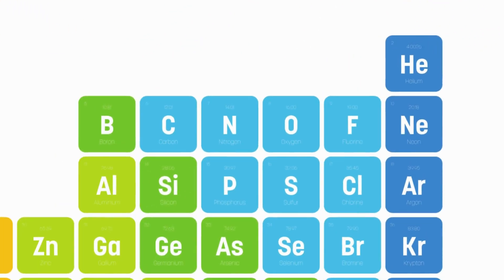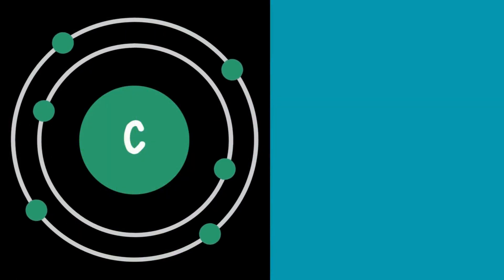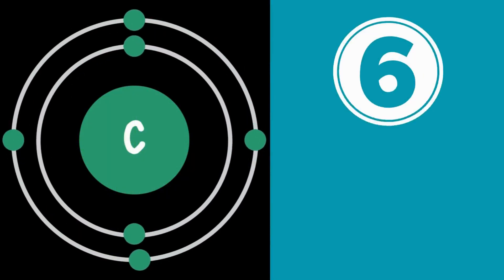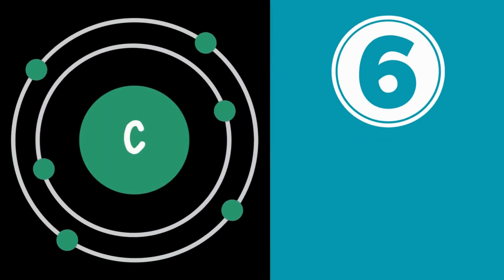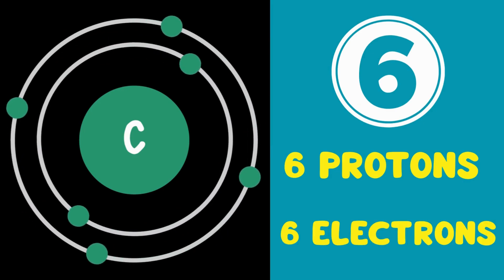Carbon is the sixth element in the Periodic Table. That means it has an atomic number of six, with six protons and six electrons.